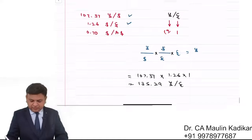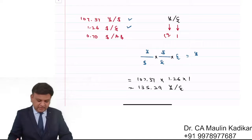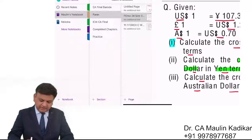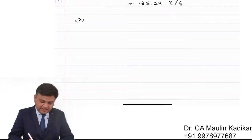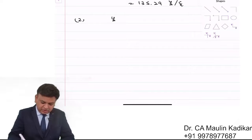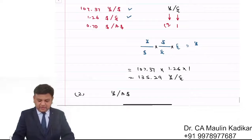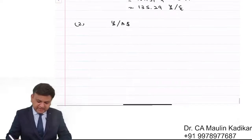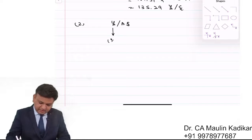For the second question, you are required to calculate the cross rate for Australian dollar in yen terms. We are required to make the calculation with the answer expressed as yen per Australian dollar. Please calculate the answer and put it in the chat box. What is the amount of yen per Australian dollar?